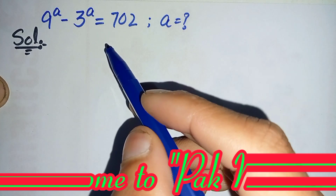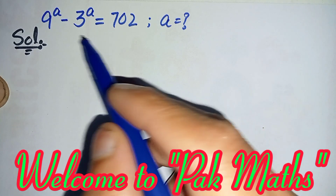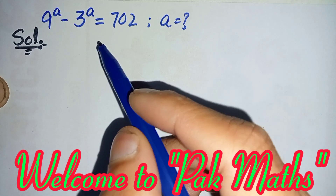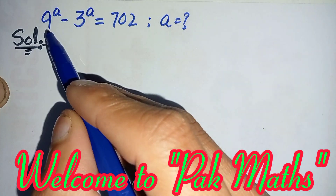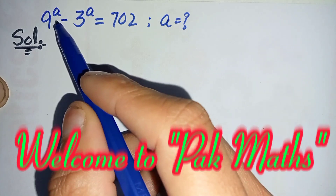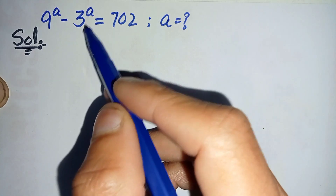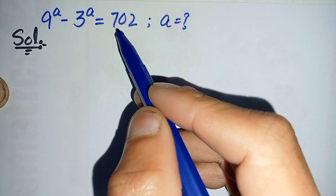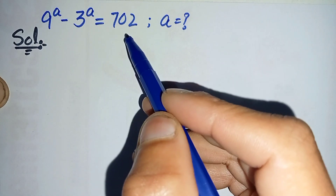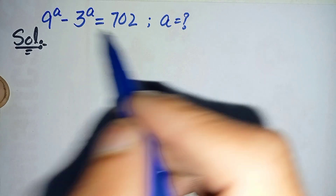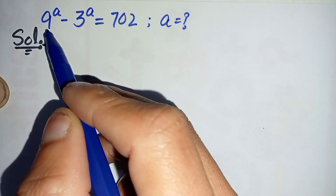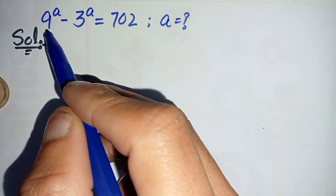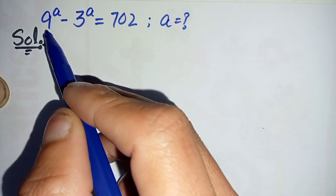Hello, you are welcome. How to solve this nice exponential equation which is 9 raised to power a minus 3 raised to power a is equal to 702. First of all, we will change this 9 to its exponential form.